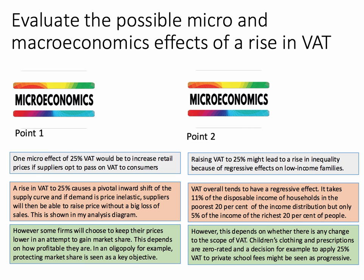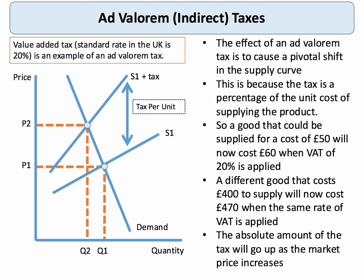So those are two micro points. An ad valorem tax causes a pivotal shift in the supply curve, and you can show quite clearly what happens to the price and quantity — you could also develop it to show the revenue. A good analysis diagram can go a long way to building your KAA scores.